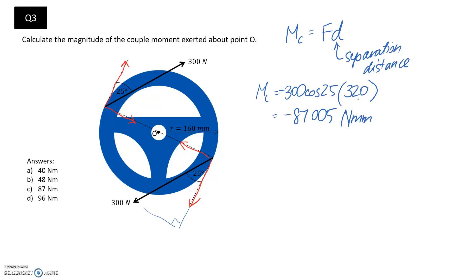The only thing to do now is to correct it for the answers which are all in newton meters. To go from millimeters to meters you need to divide by a thousand, so that would make it about negative 87 newton meters.